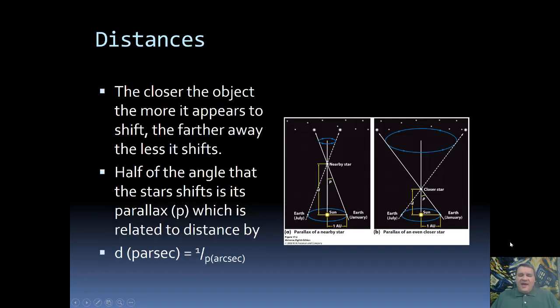Okay well because we have this relationship, the farther away the object is the smaller the parallax angle we get, we can form this equation. The distance to the object measured in parsecs is equal to one divided by the parallax angle measured in arc seconds.